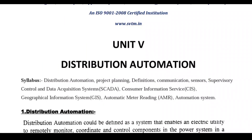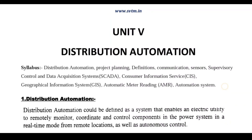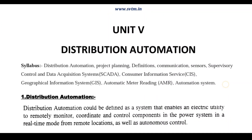The syllabus regarding distribution automation includes planning, definitions, communication, sensors, and Supervisory Control and Data Acquisition — that is SCADA — which is very important. Other key topics are Consumer Information Services (CIS), Geographical Information System (GIS), Automatic Meter Reading (AMR), and automation systems — all related to what is happening on the distribution side.